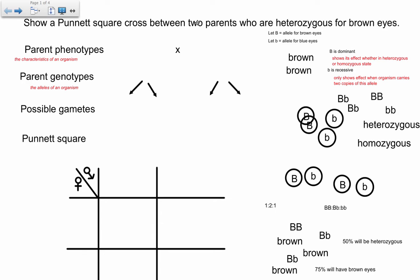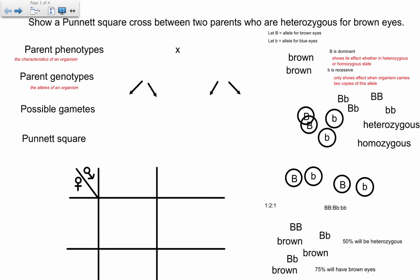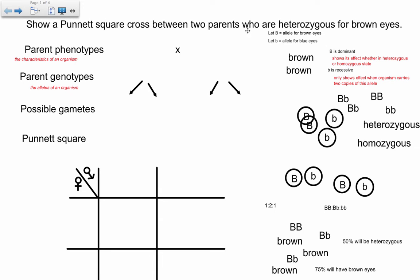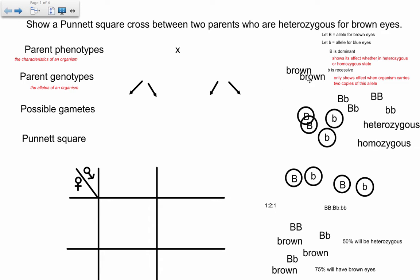So here we go. The question can be phrased in many different ways — we'll try to look at a whole bunch of different ways these questions can be asked. Here's just one way: show a Punnett cross between two parents who are heterozygous for brown eyes. You should always start by setting up your genetic questions systematically, and you should practice doing this.